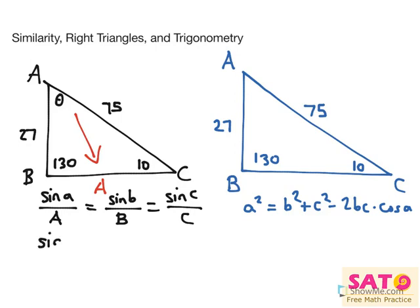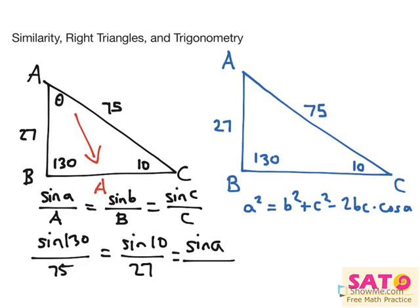So let's plug in this formula. We would get sine of B, which is 130, over 75, equals sine of 10, equals 27. If we solve that out, and then we can actually plug in the missing angle, sine of A, equals, let's say A is 12. Then we can plug it in to solve for A, and we would cross multiply for that.